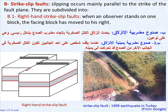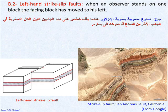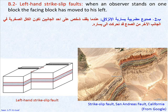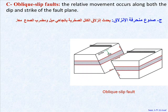B, strike-slip faults — slipping occurs mainly parallel to the strike of the fault plane. They are subdivided into: B1, right-hand strike-slip faults, where an observer standing on one block sees the facing block has moved to his right; B2, left-hand strike-slip faults, where the facing block has moved to his left. C, oblique-slip faults — the relative movement occurs along both the dip and strike of the fault plane.